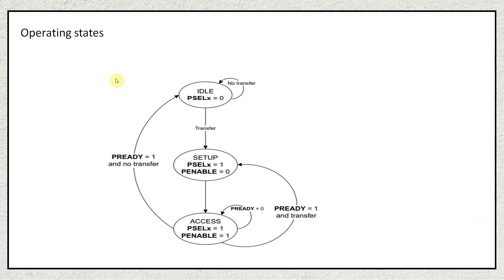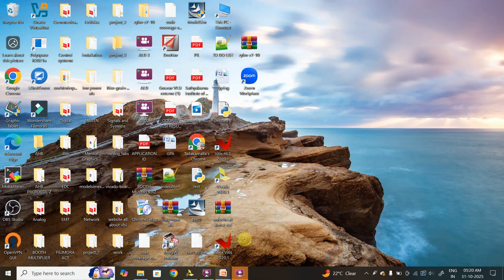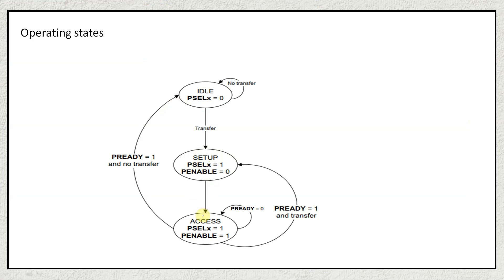Hello all, welcome back to my YouTube channel All About VLSI. In this video we are going to start with the Verilog code development of APB master and APB slave. For the development of the APB master Verilog code, we are going to follow a state diagram. Initially whenever you apply your reset signal you are going to be in the idle state, and after the idle state if transfer equals one then you go to the setup phase, then to the access phase.